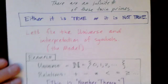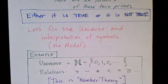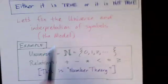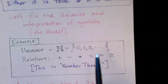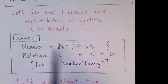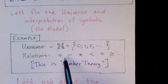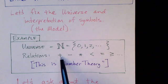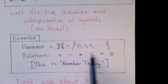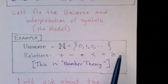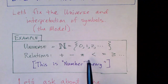So let's talk a little bit more about number theory. And so we can just fix the universe and the interpretation of symbols and stick with one universe—the universe of natural numbers starting with zero and the relations that we are used to using in algebra: addition, subtraction, multiplication, less than, equal, and so on.